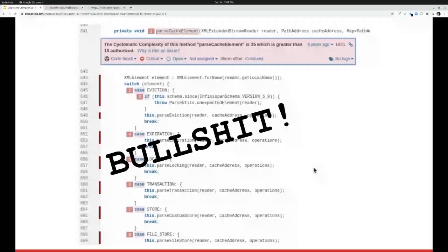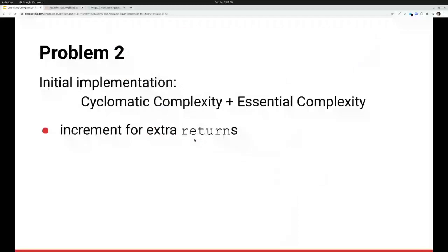The next problem that we had with cyclomatic complexity was in our initial implementation. Someone, and I honestly don't know who, had the bright idea in this implementation to combine both cyclomatic complexity and essential complexity and call it cyclomatic complexity. And so we were incrementing not just for everything that cyclomatic complexity should increment for, including every case in a switch, but also for extra returns. And so people were calling bullshit on that as well, reasonably.